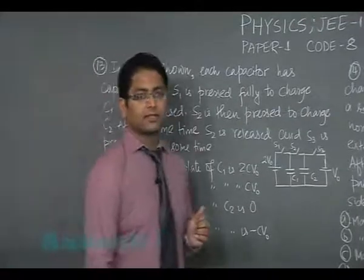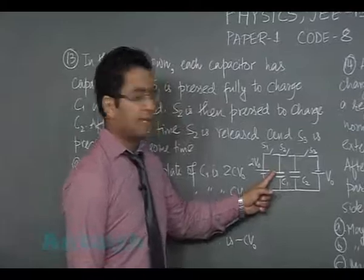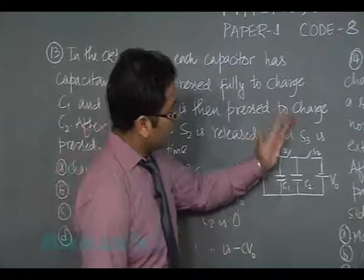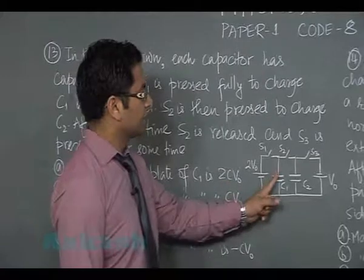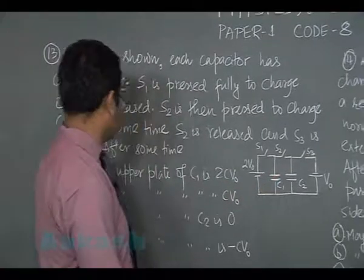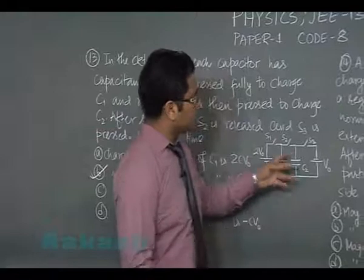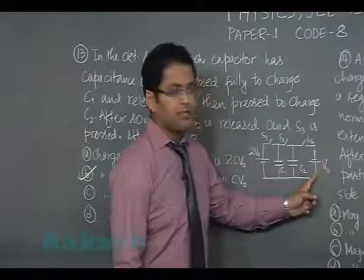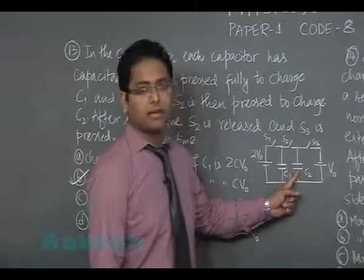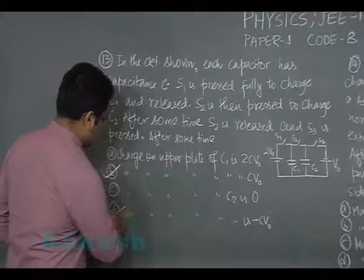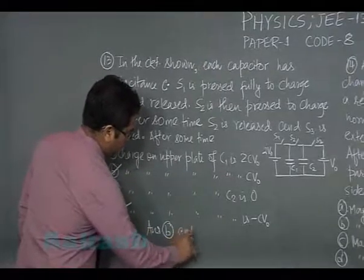Let's see: charge on the upper plate of C1 is 2 CV naught. That would be false because when S1 is pressed, the upper plate will have a charge 2 CV naught, but then when S2 is pressed, C1 and C2 would complete the circuit, they would share, so finally they would have equal charge. So the charge on the upper plate would be CV naught each, so therefore second option would be correct. And finally, whatever be the charge on C2, it is connected to a battery, the source of constant potential difference, so the upper plate will have minus CV naught, lower plate will have plus CV naught. So option number D would be correct. So this one will give answer B and D.